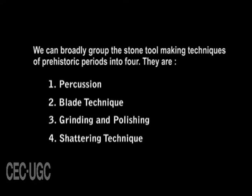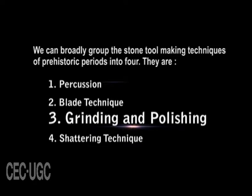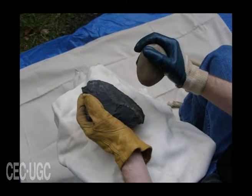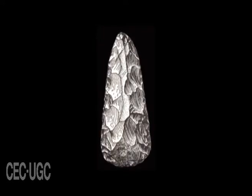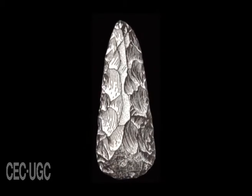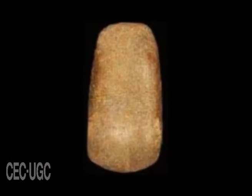Grinding and polishing is the characteristic feature of making Neolithic tools. Though Neolithic stone tools are shaped by applying various methods of percussion flaking and pecking, the rough flaking or pecking surfaces are further worked by grinding and polishing to produce smooth and polished surfaces.